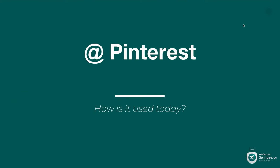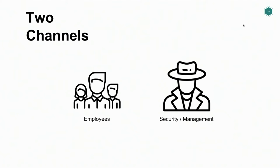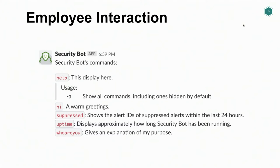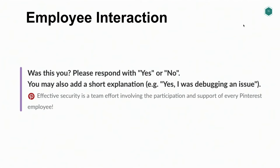So what does this system actually look like? How do we use it today? There are two primary channels of interaction with SecurityBot: the direct message it sends to a user to verify an alert, and the security private channel where alerts are escalated and where the security team can surface information about the system. From the employee side, this is what they see when they run help — not a whole lot, mostly informational stuff. The two commands not on that list are yes and no, which we include in the footer of every alert message as the final call to action.